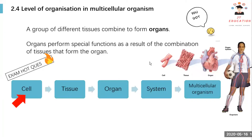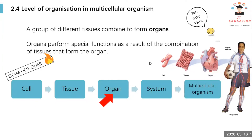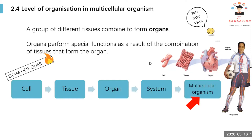We know that the group of tissue forms an organ, and organs that work together to carry out specific functions form an organ system. So we start from here — first from a cell, then tissue, after that organ, then system, and finally a multicellular organism like a human in the picture.